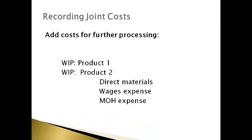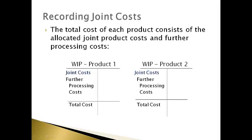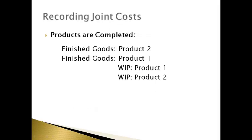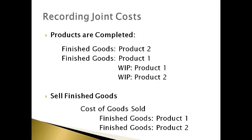The product costs incurred to further process each product are recorded to each product's individual work-in-process account. The total cost of each product consists of the allocated joint cost and further processing cost, and each product has its own WIP account. The total cost divided by the quantity of products made gives the cost for one unit. The total cost of completed products is transferred to finished goods, and the cost of finished goods is moved to cost of goods sold when products are sold to customers.